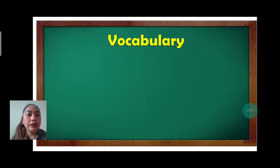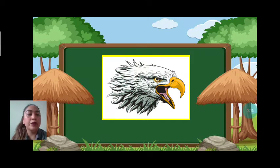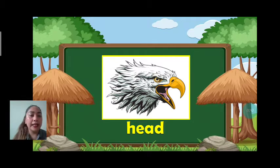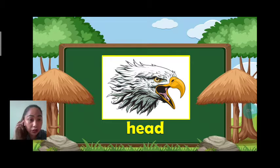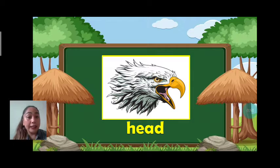Vocabulary about parts of the bird. First one we have — everybody — head. Let's spell: H-E-A-D. Head. What part of the bird is it? It's a head.